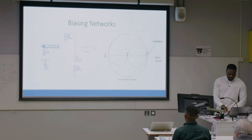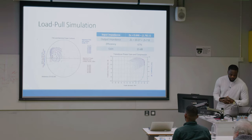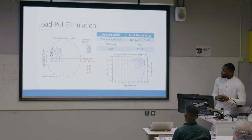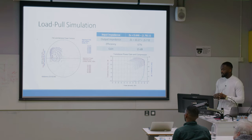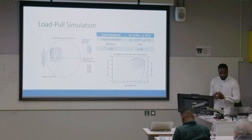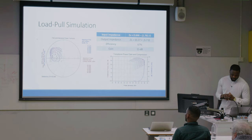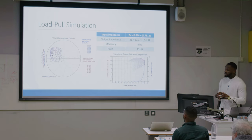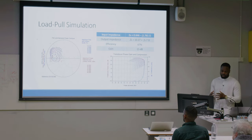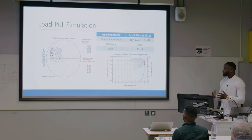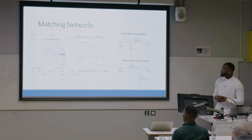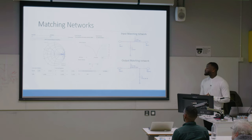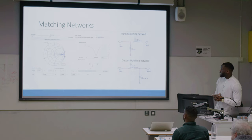I used load pull to find the load impedance that would optimize the device, because in order to maximize power transfer and efficiency the transistor needs to be matched. From load pull you can find the gain, power added efficiency, and distortion as a function of load impedance. I then used the Smith chart tool in ADS to design the input and output matching networks.